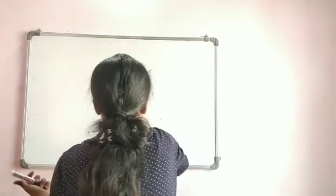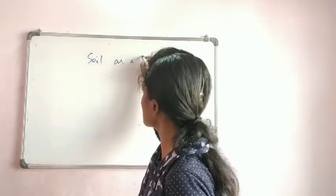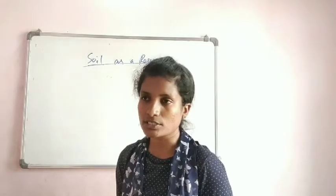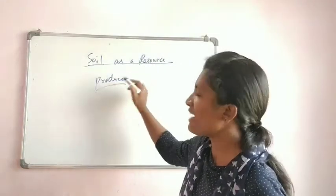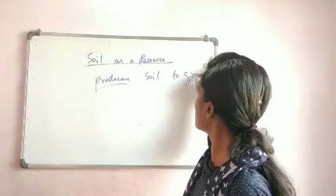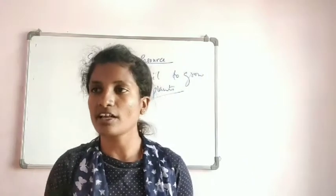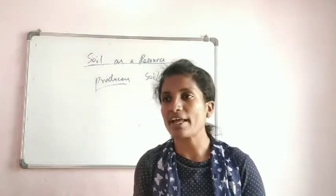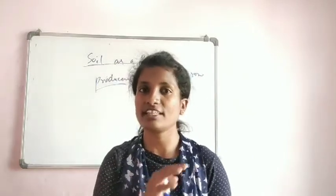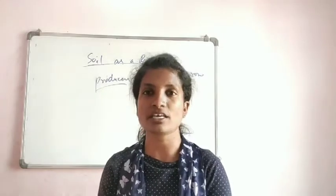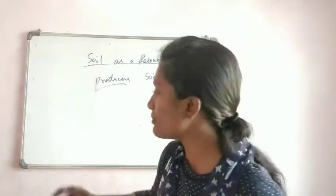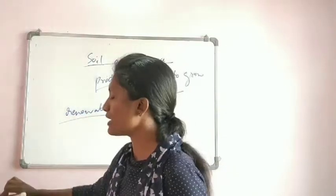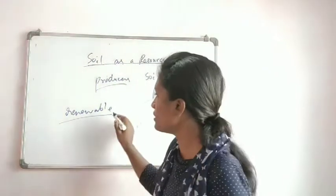The next important topic is soil as a resource. The upper layer of land is soil. Soil is very important because all living organisms need food, and producers — plants — need soil to grow. Plants that grow on soil are terrestrial plants that provide food for us. Hence, soil is a renewable resource.